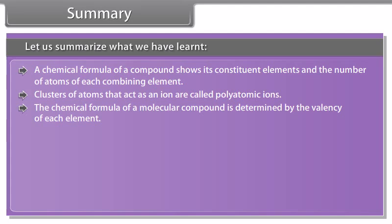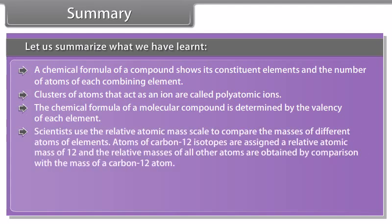Did you know. A compound's empirical formula is the simplest integer ratio of the chemical elements that constitute it. For example, water is always composed of a 2 is to 1 ratio of hydrogen to oxygen atoms, and ethyl alcohol or ethanol is always composed of carbon, hydrogen and oxygen in a 2 is to 6 is to 1 ratio.